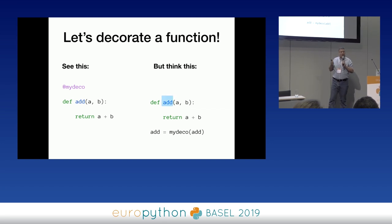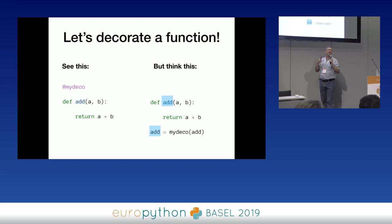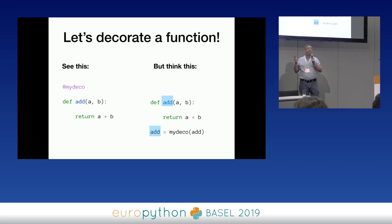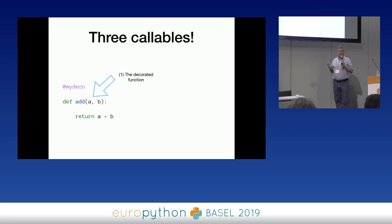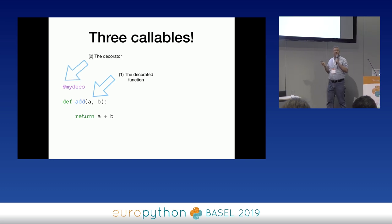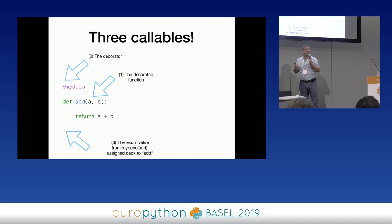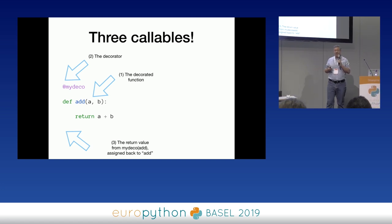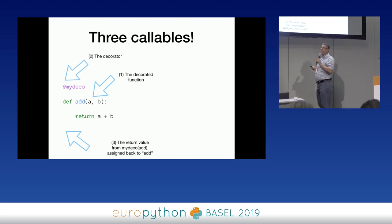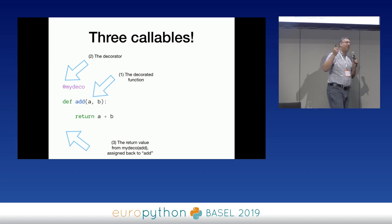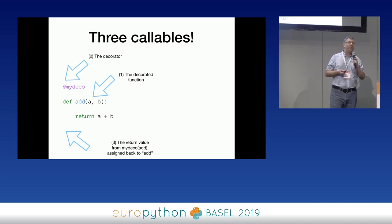Here we have 'add', our original function. Then the same name 'add', but we're doing a little switcheroo — we're changing what 'add' is referring to. It's no longer referring to the original function; rather, it's going to be referring to the result from calling my_deco on add. We have three callables: our original function, my_deco, and the mystery hidden callable — that's what we get back from calling our decorator. So if we're going to implement a decorator, we need to write a callable that takes a callable as an argument and returns a callable as output.